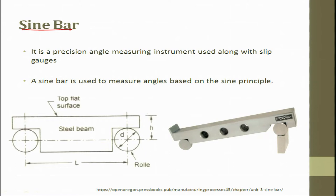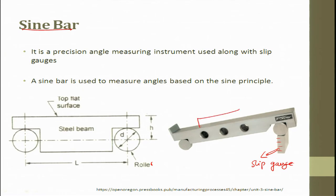The next device is the sine bar. Sine bar is a precision angle measuring instrument used along with slip gauges. You put a slip gauge at one end of the roller to create a height. The surface is a flat plate — you place it at an incline, put the work piece, and dial it to find the zero point. From the height, you can convert and find out what is the angle. A sine bar is used to measure angles based on the sine principle.